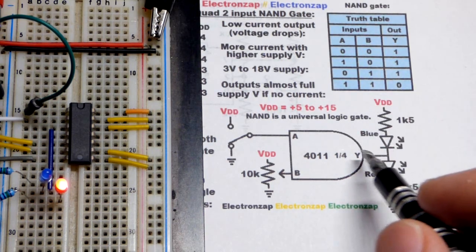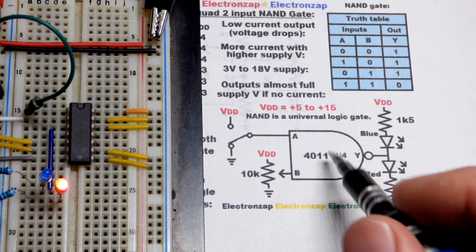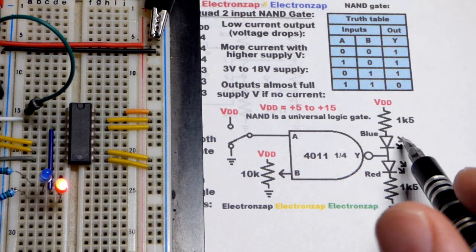We already saw the truth table and there you can see blue LED lights up when we go to the negative supply at the output, and then when the output comes from the positive supply that's when the red LED lights up.